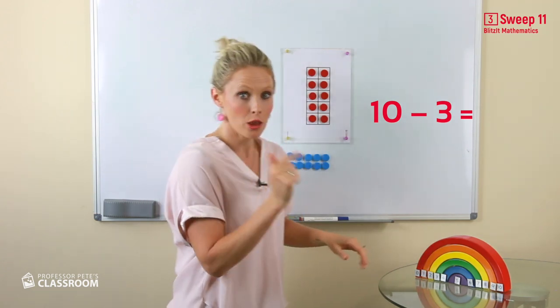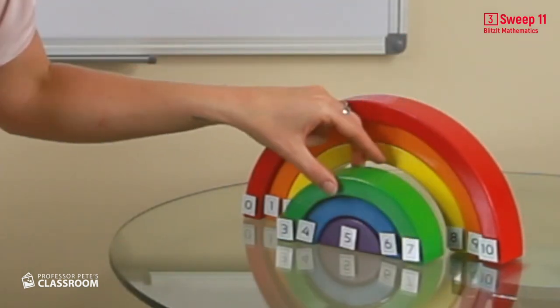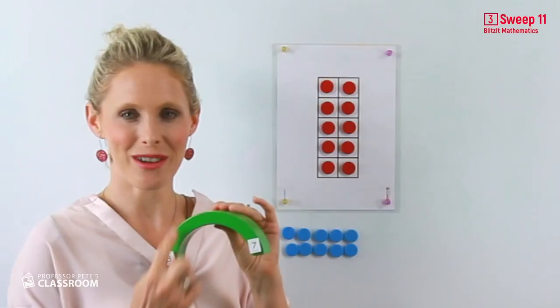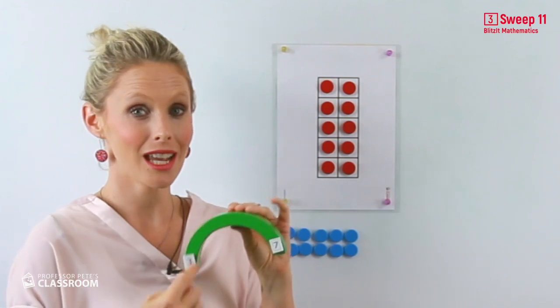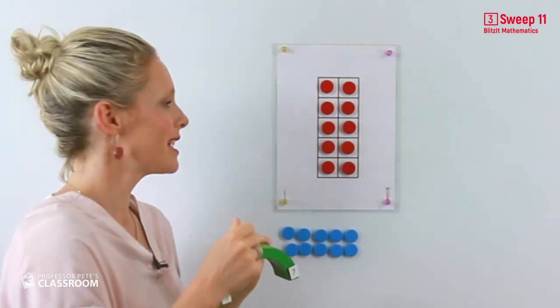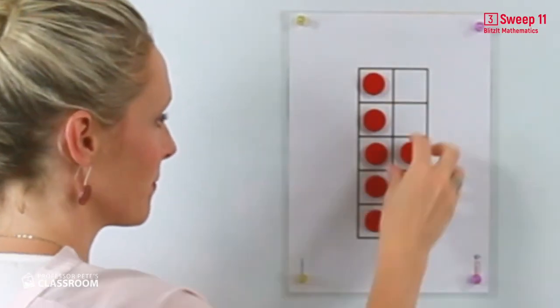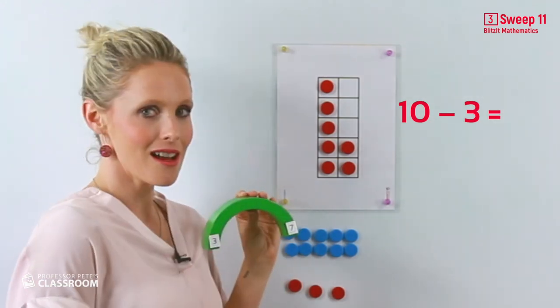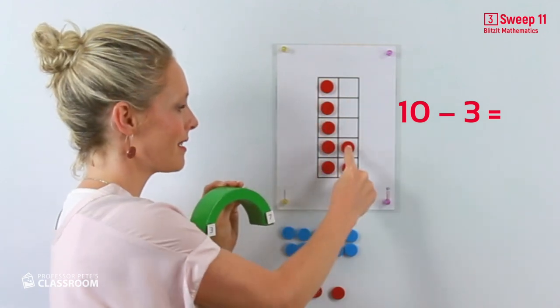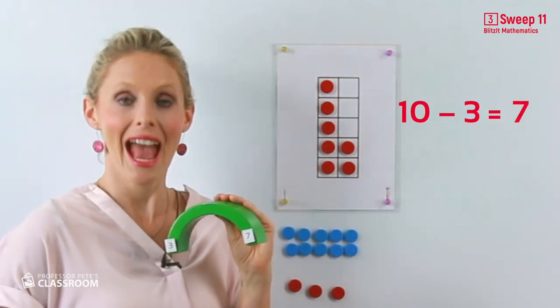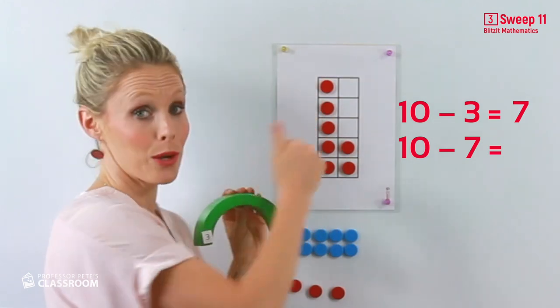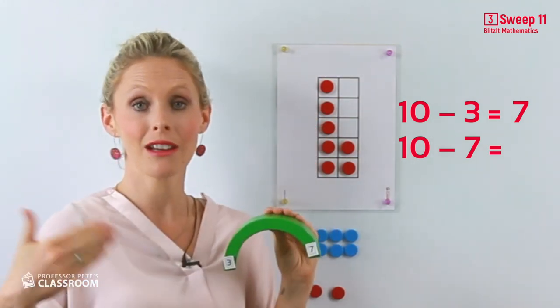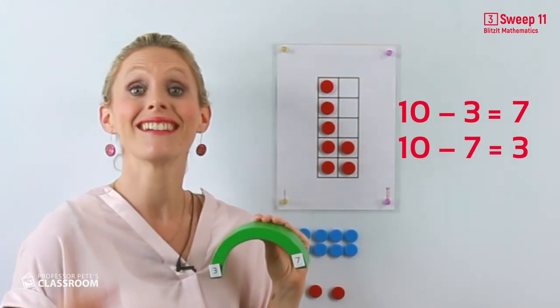I look at my rainbow number fact. 3 and 7, 7 and 3 equals 10. Therefore, I know every time that the answer is going to be 7. And remember the turnaround. If we had take away 7, the answer would have to be 3 because they are connected.